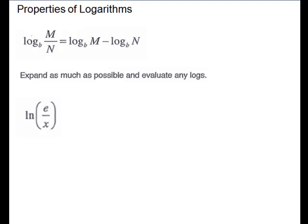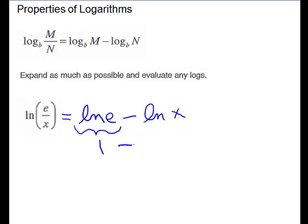For the last one of this type, we have the natural log of e over x. It follows the same rules as the other logs, so it will be the natural log of e minus the natural log of x. The ln of e is 1, so the answer is 1 minus ln of x.